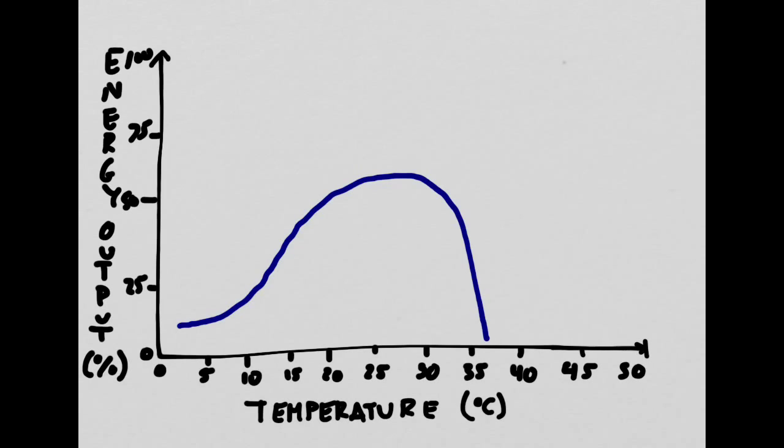An ectotherm can do low levels of activity even at very cold temperatures, so down here. Its peak level of activity happens at right around room temperature, so about 20 to 25 degrees. Above room temperature, however, ectotherms experience a dramatic drop in productivity. When it gets too hot, they simply can't perform anymore.